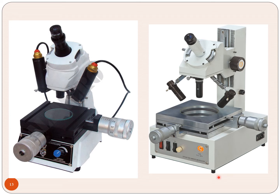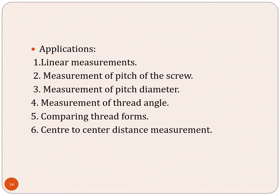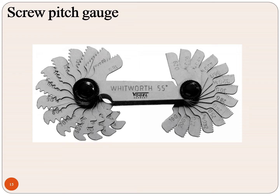Look at the tool makers microscope and its applications: measurement of linear dimensions, measurement of pitch of the screw, measurement of pitch diameter, measurement of thread angle, comparison of thread forms, and center-to-center distance measurement — all of these can be done with the tool makers microscope. Now look at this screw pitch gauge — here we are having pitch markings like on threads. By using this we can easily measure the pitch of the screw, with markings such as 90G, 20G, and for flank angle measurement.